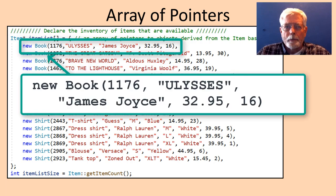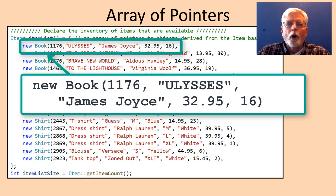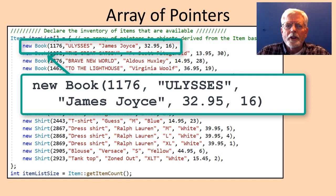The new operator returns the memory address of an object that it instantiates. For example, the first element in the array has new book 1176, Ulysses, James Joyce, 32.95, 16. The new operator instantiates a book object in memory, returns its memory address, which is then saved in the first element in the item list array of pointers.